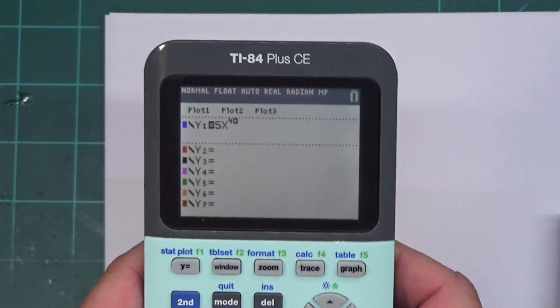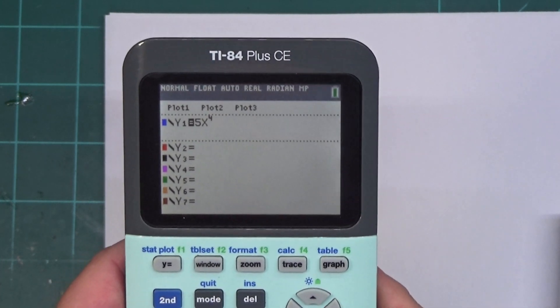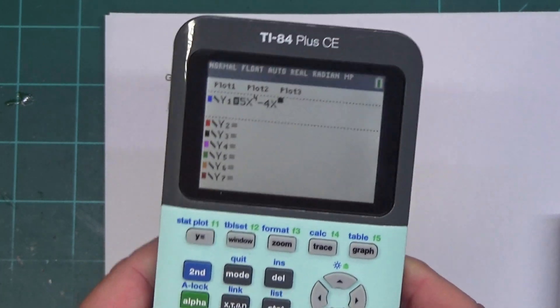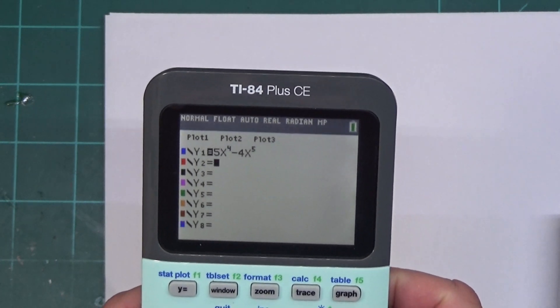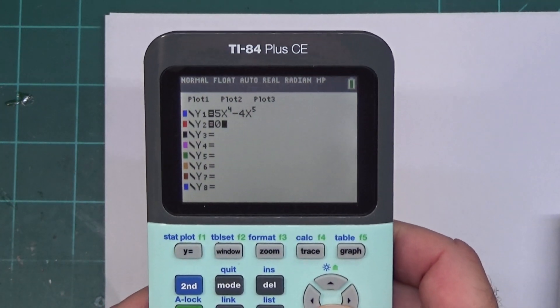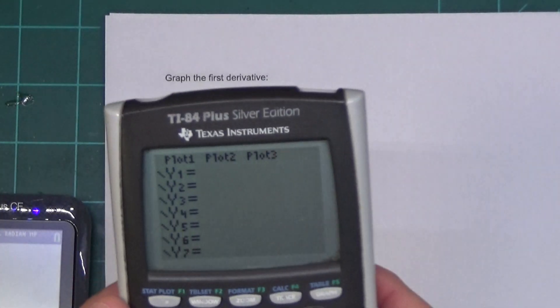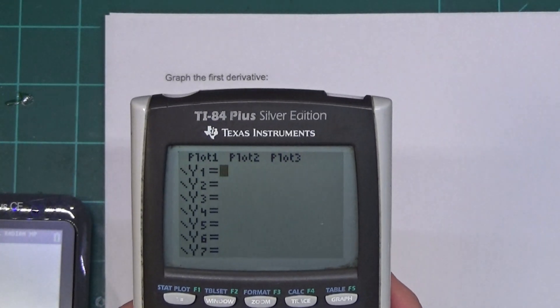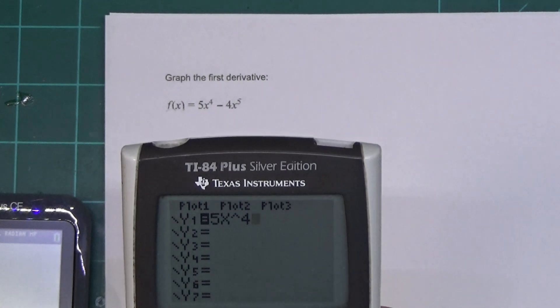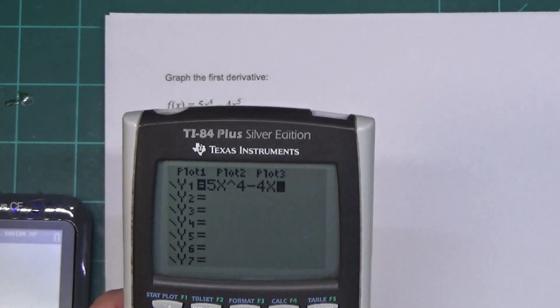It's 5x to the 4th. You have to push the arrow button to get out of the exponent, minus 4x to the 5th. I'm going to go ahead and put a 0 in y2. That will be apparent as to why in a little bit. Same thing here.